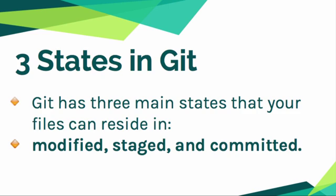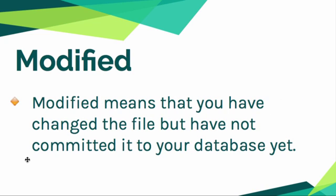Git has three states that your files are going to be in. They're basically going to reside in either modified, staged, or committed. Modified means that you have changed the file but you haven't actually committed it to your database yet. So it's kind of like when you're working on a file on your desktop and you make some changes — on a Mac you see a little star at the top, meaning that you've made changes but you haven't saved the file yet.